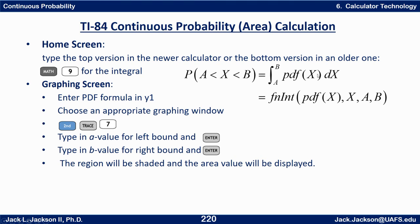Here are the reference slides with screenshots. For the TI-84, Math 9 gets you to fnInt from the home screen — enter the formula or Y1(x) for the function, X as the variable, then lower and upper bounds a and b. That calculates the area under the PDF curve, which is the probability. If you'd like shading, enter the PDF in Y1, choose an appropriate window, then 2nd TRACE (CALC), option 7, type A for left bound and B for right bound.